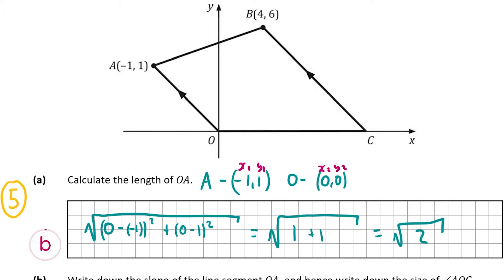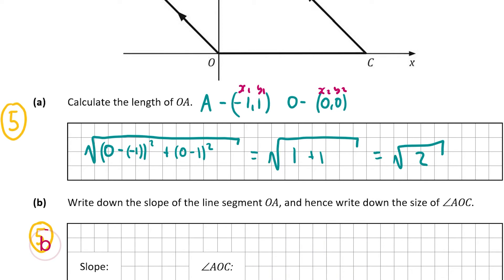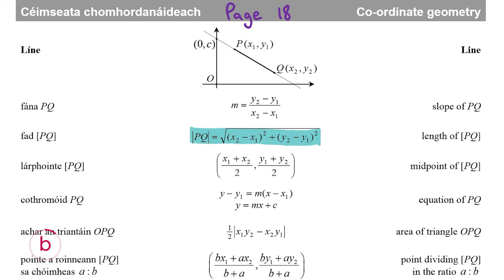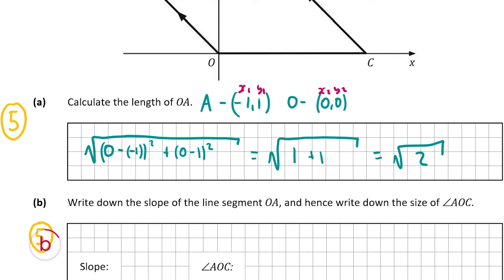Part B is also worth 5 marks. We need to work out the slope of line segment OA and write down the size of angle AOC. The slope formula, also on page 18 of the formula and tables book, is (y2 minus y1) over (x2 minus x1). Using the same coordinates: (0 minus 1) over (0 minus minus 1) equals minus 1 over 1, which is minus 1. So the slope of OA is minus 1.